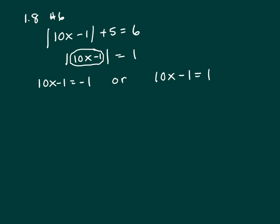So now let's add one. Let's look at this equation on the left and add one to both sides. You get 10x equals 0 because negative 1 plus 1 is 0. And that gives you x equals 0.